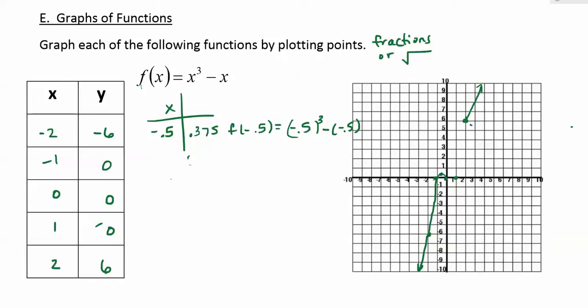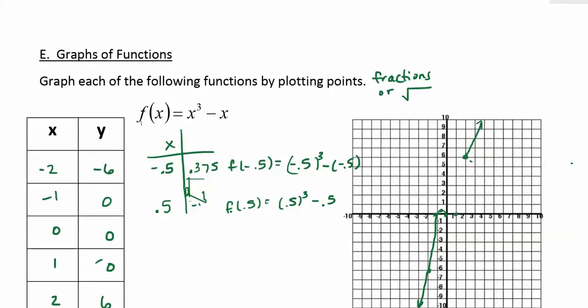And then let's plug in positive 0.5. So f of 0.5 is 0.5 to the third minus 0.5, and that's going to be negative 0.375. So at positive 0.5 on the x-axis you go down to negative 0.375. So we get kind of like a roller coaster graph.